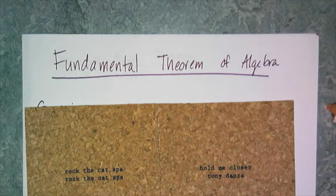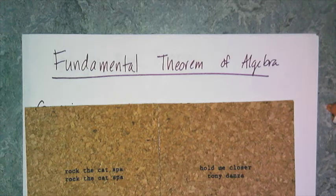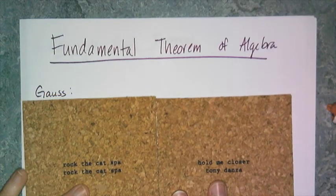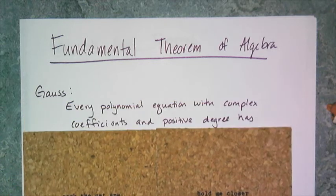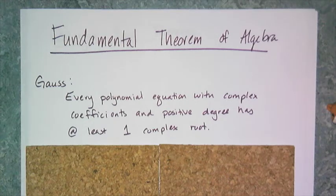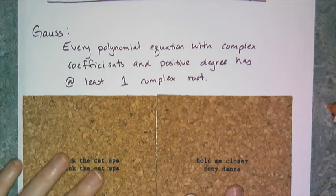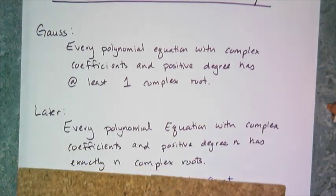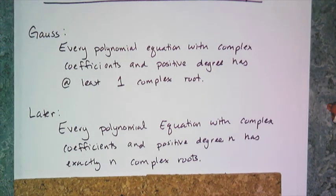Now we're going to look at the fundamental theorem of algebra — the theorem that makes algebra work the way it does. The first version was proven by Gauss: every polynomial equation with complex coefficients and positive degree has at least one complex root. Later, mathematicians proved the stronger version: every polynomial equation with complex coefficients and positive degree n has exactly n complex roots. So the degree tells you how many roots there are.